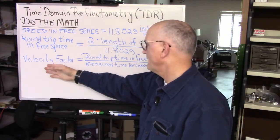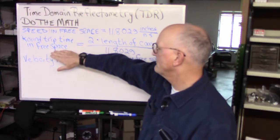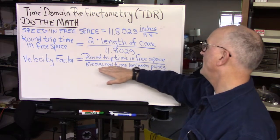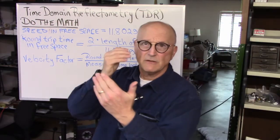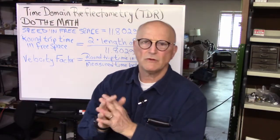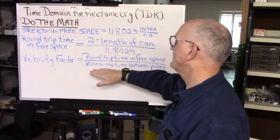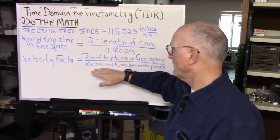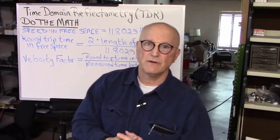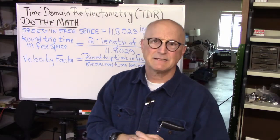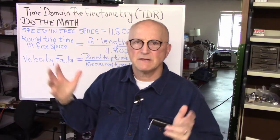The velocity factor then becomes the round trip time in free space, that's this number that you just got, divided by the measured time between pulses. Because the signal is going more slowly down that piece of transmission line than it would in free space, this number is going to be bigger than this number, and so the resulting velocity factor is going to be some number less than one, probably on the order of 0.6 to 0.8 somewhere in there.